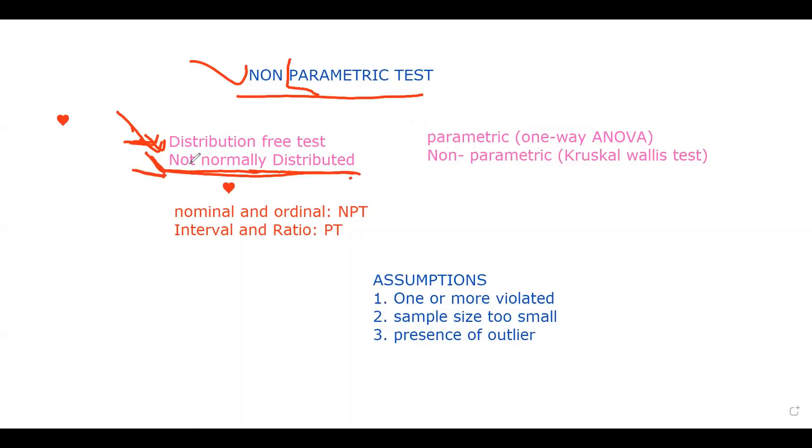For example, if we are talking about a test which is known as one-way ANOVA, which is a kind of parametric test, it has an assumption that the data should be normally distributed. So if your data is not normally distributed, we cannot run the ANOVA. So the researcher should use another alternative which is known as non-parametric test. The alternative for one-way ANOVA in non-parametric test is the Kruskal-Wallis test.